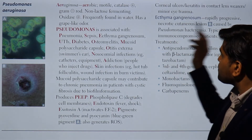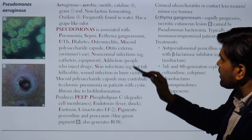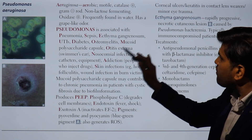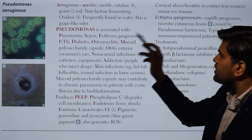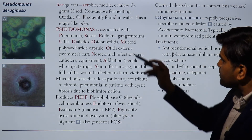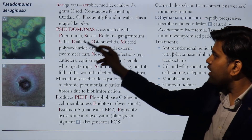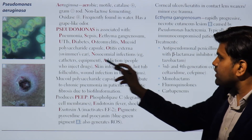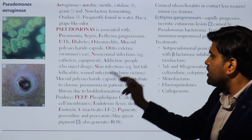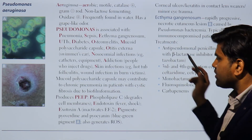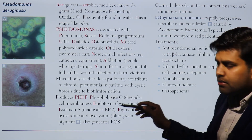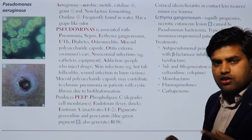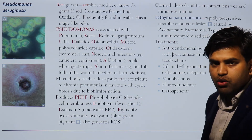Now from First Aid 2021, page 143: Pseudomonas aeruginosa is an aerobic, motile, catalase-positive, gram-negative rod. It is non-lactose-fermenting and oxidase positive, frequently found in water, and has a grape-like odor. Pseudomonas is associated with: pneumonia, sepsis, ecthyma gangrenosum, UTI, diabetic osteomyelitis, mucoid polysaccharide capsule, otitis externa, nosocomial infections (catheter and equipment related), injection drug use skin infections, hot tub folliculitis, burn infections. Its mucoid polysaccharide capsule contributes to chronic pneumonia in cystic fibrosis patients through biofilm formation.